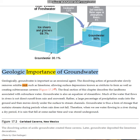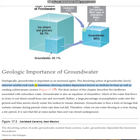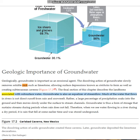Geologic Importance of Groundwater. Geologically, groundwater is important as an erosional agent. The dissolving action of groundwater slowly removes soluble rock such as limestone, allowing surface depressions known as sinkholes to form as well as creating subterranean caverns, as shown in Figure 17.2. The final section of this chapter describes the landforms associated with subsurface water.